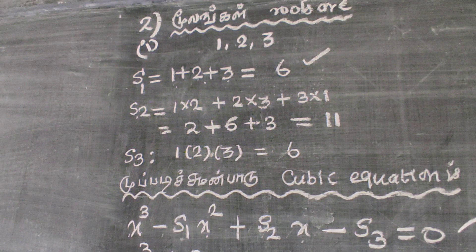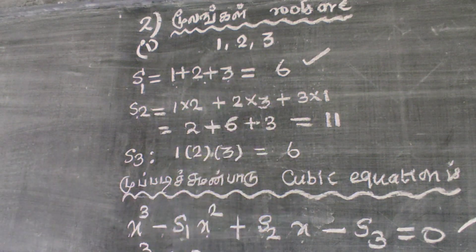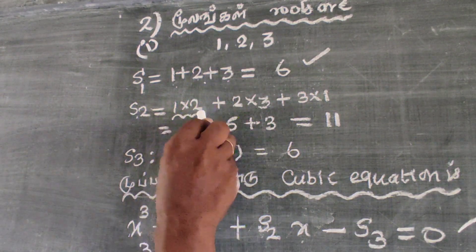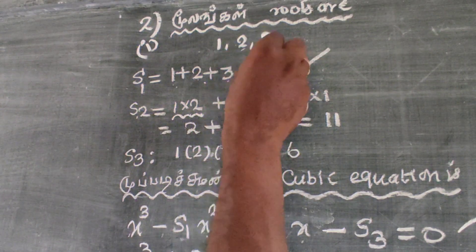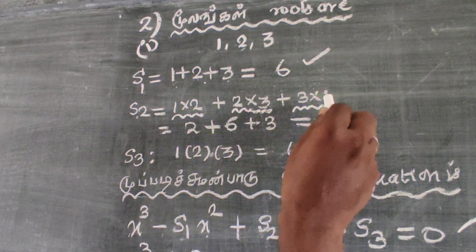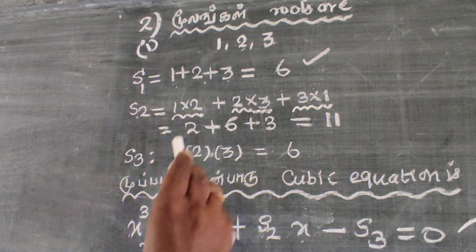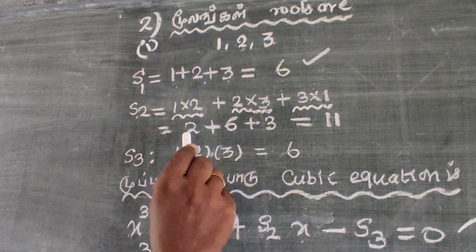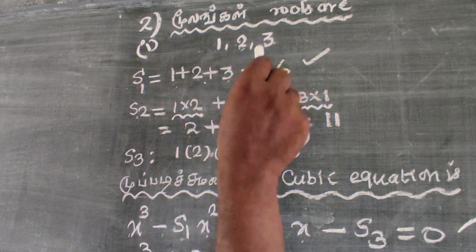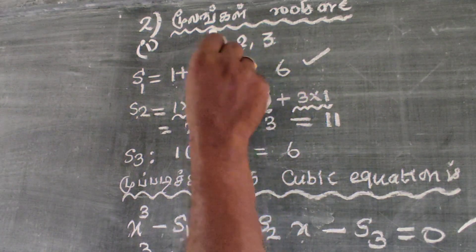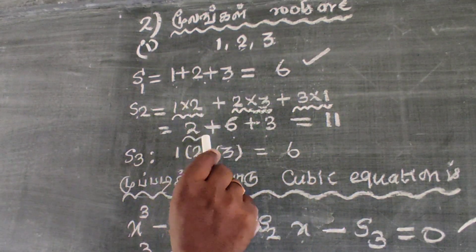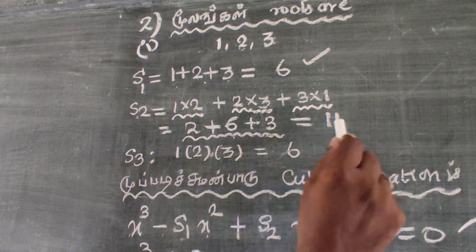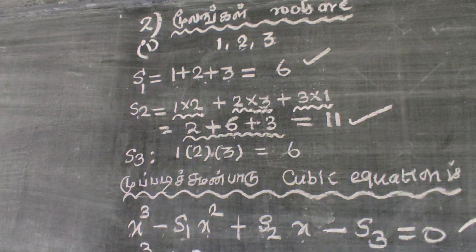S2 is the sum of products of pairs of roots: alpha beta plus beta gamma plus gamma alpha. So: 1 into 2 is 2, plus 2 into 3 is 6, plus 3 into 1 is 3. That gives 2 plus 6 plus 3, which is 11.